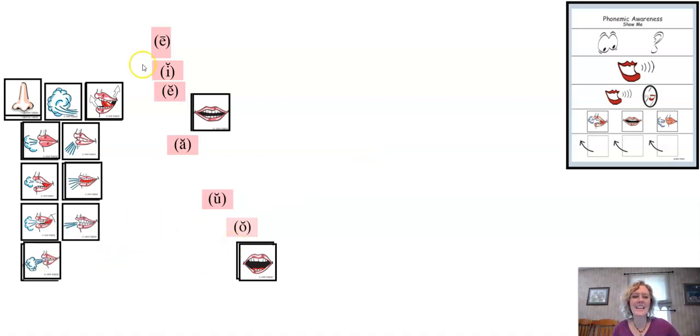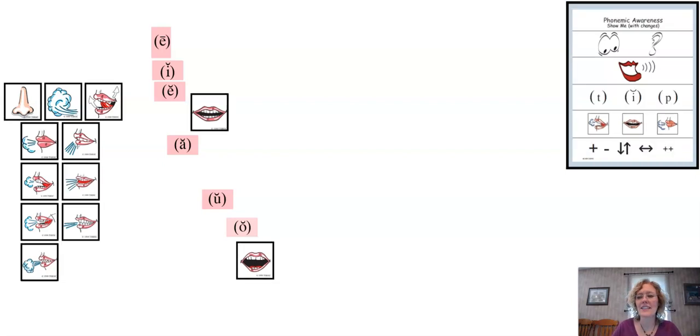Now let's go to our next section. We're going to use those same cards. Only this time, let's look at our procedures. We have look and listen, echo, unblend the word, pull down the sound cards, and then we're going to wait to see if we add, take away a sound, trade for a sound, or switch.